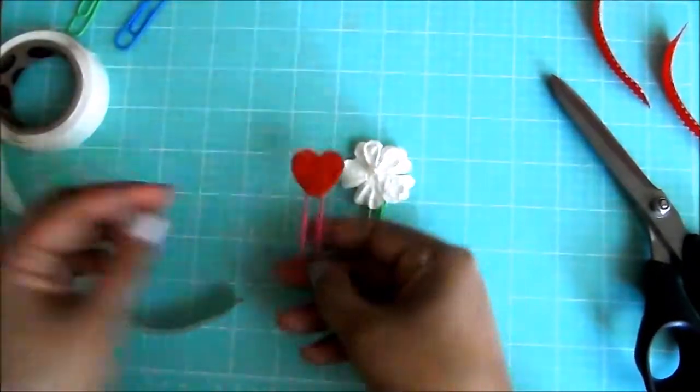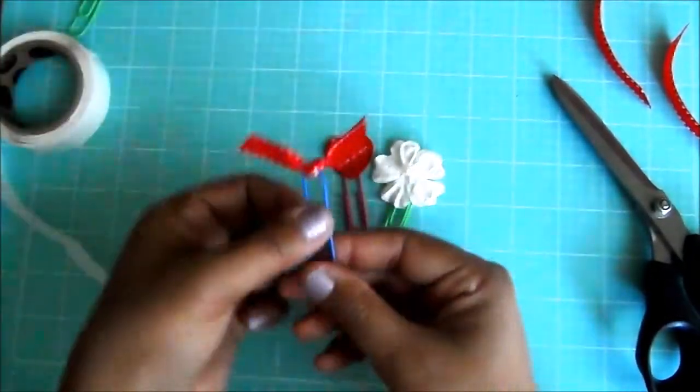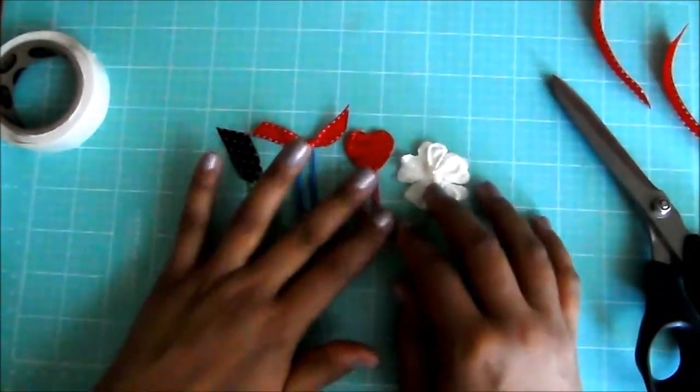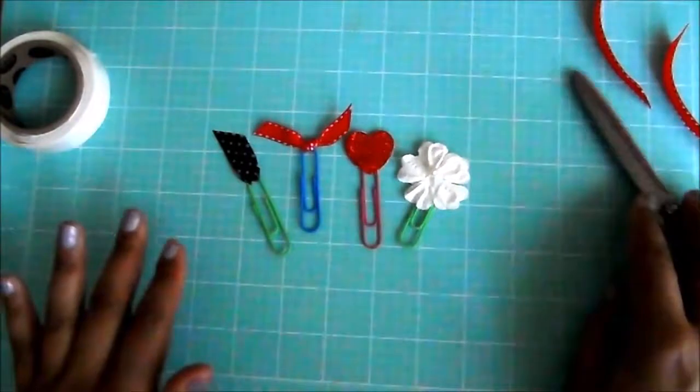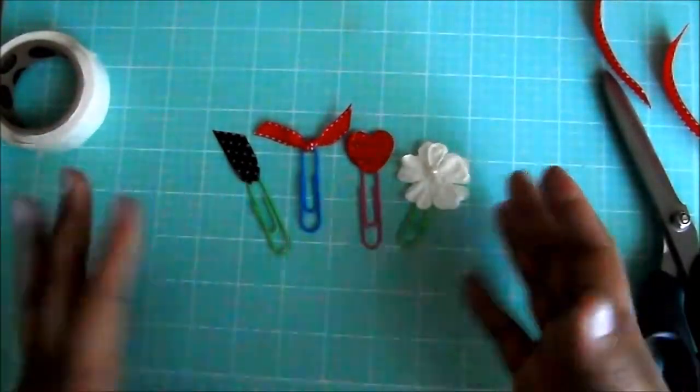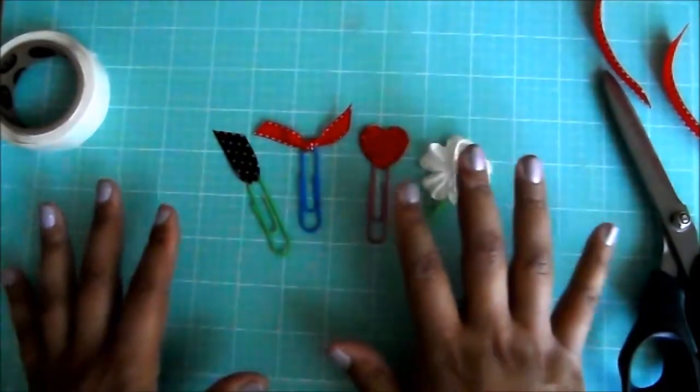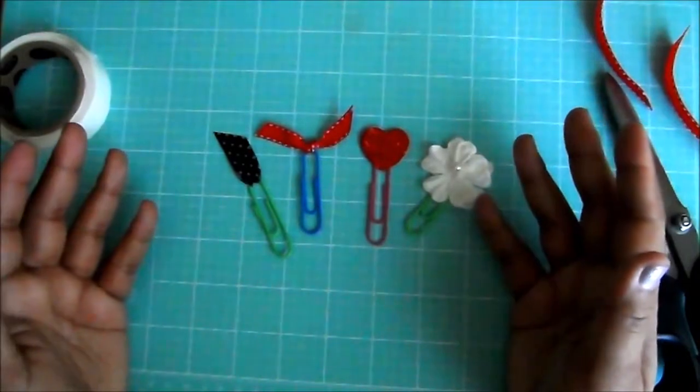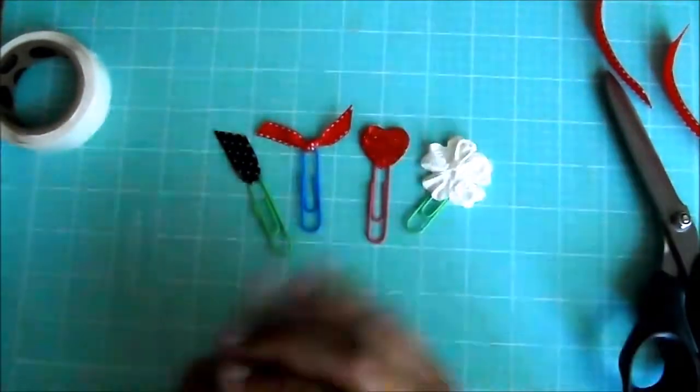We made one with stickers, one using ribbon, and one using washi tape. The possibilities are endless. This was super easy, super quick, and they're really cute to put on your paperwork and your notebooks in school, use as a bookmark when you're reading a book, or to mark the pages on your filofax or your planner.